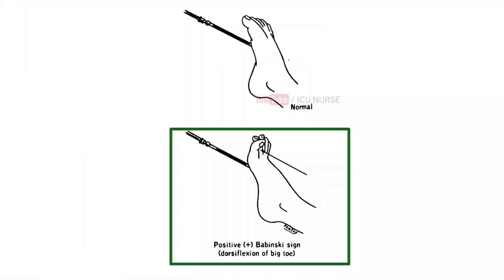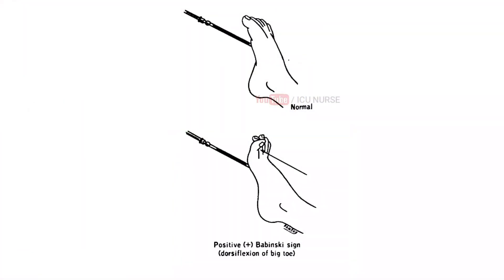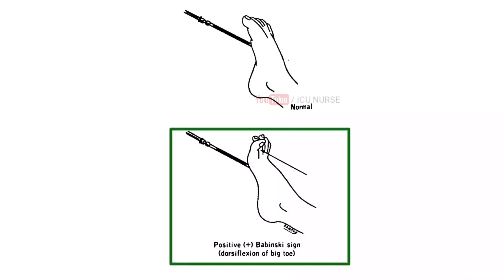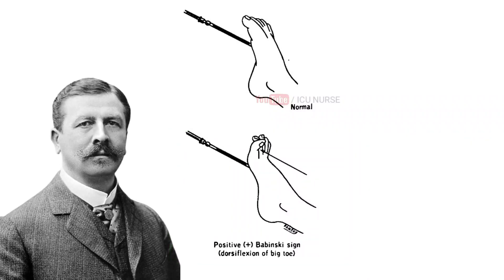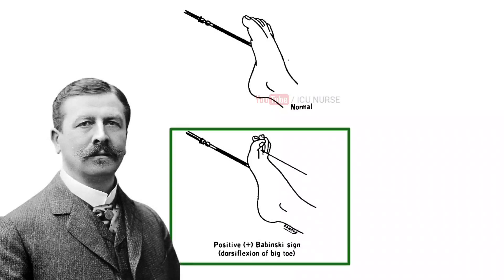An upward response, i.e. extension of the big toe, is known as the positive Babinski response or Babinski sign. Babinski sign is named after the neurologist Joseph Babinski. The response of the Babinski sign can identify disease of the spinal cord and brain in adults.